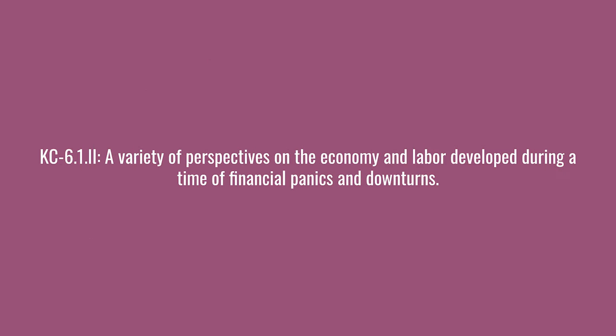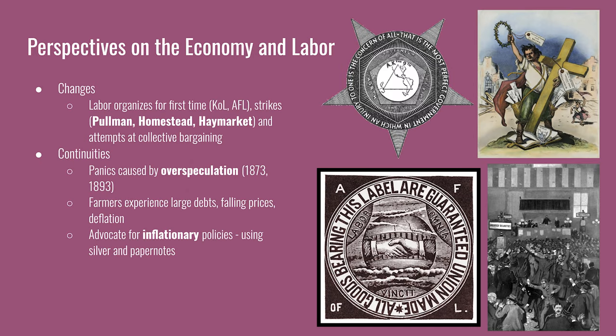The next key concept: a variety of perspectives on the economy and labor developed during a time of financial panics and downturns. The change in this period is the rise of labor unions. The Knights of Labor and the American Federation of Labor organized strikes for better pay, shorter hours, and safer working conditions. Major strikes include the Pullman strike, the Haymarket strike, and the Homestead strike. The unions attempted to gain collective bargaining rights, meaning the union can negotiate a contract for all workers in a company and sometimes an entire industry. This gives workers more leverage — if their demands are not met, all workers may strike or boycott their employer.